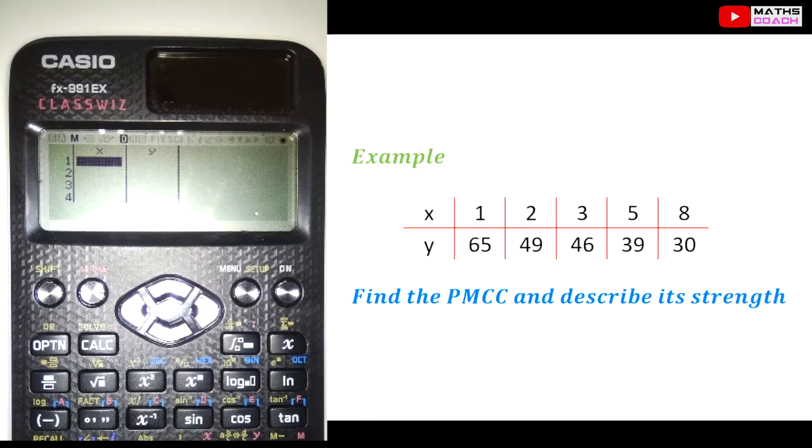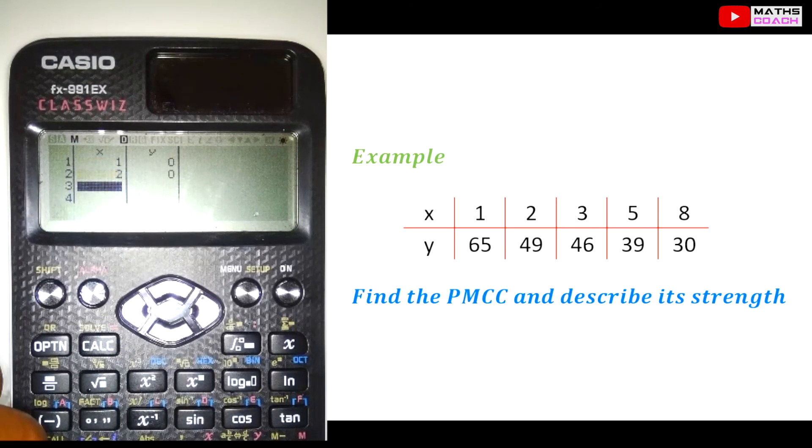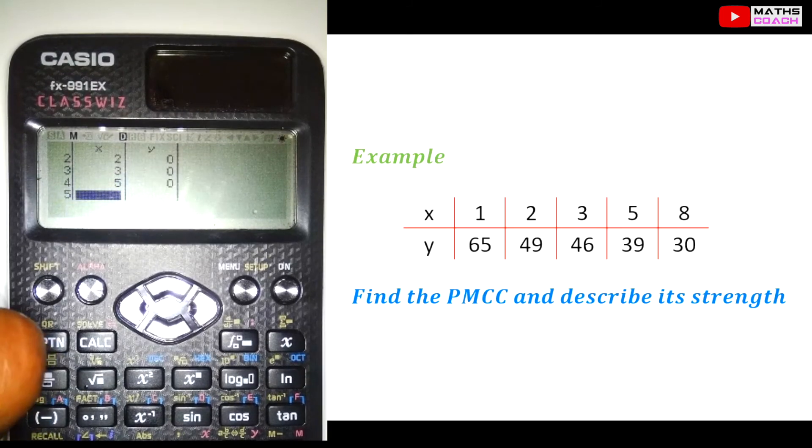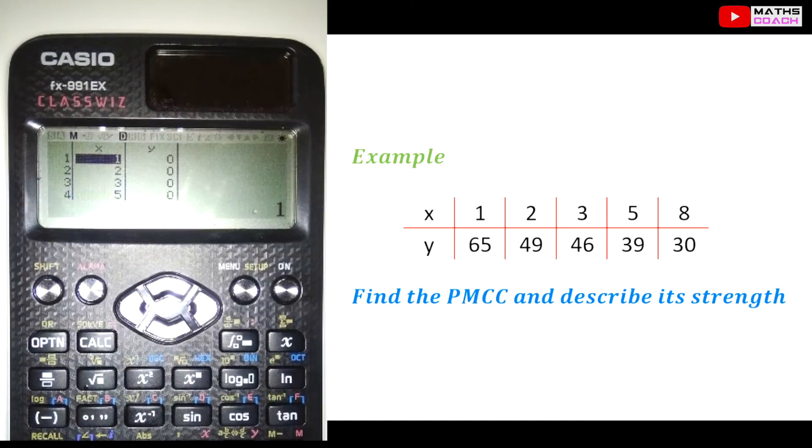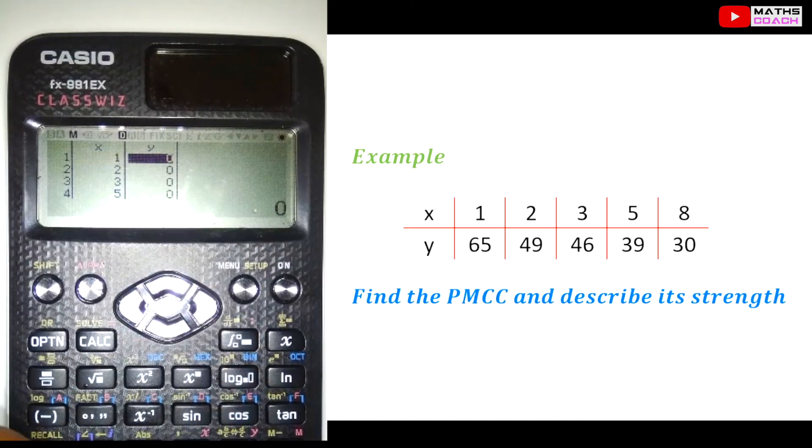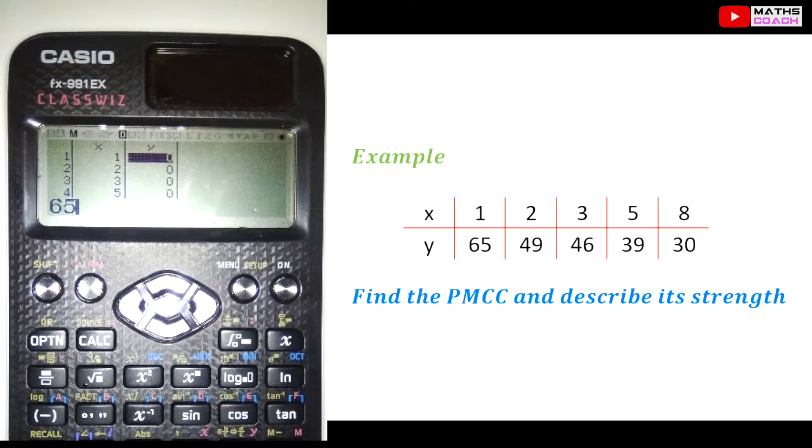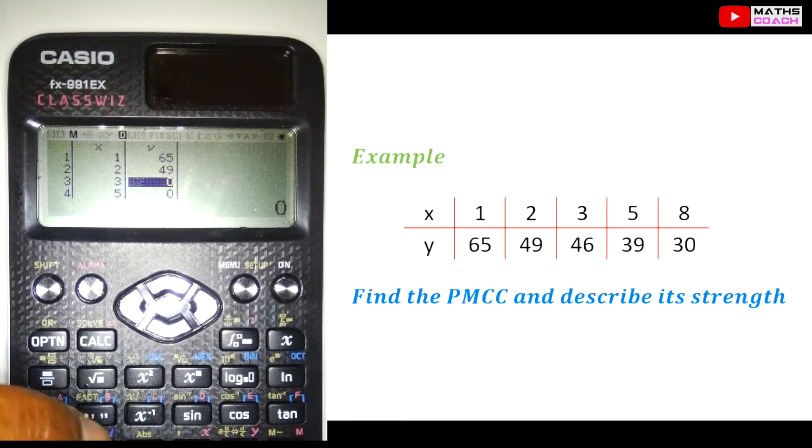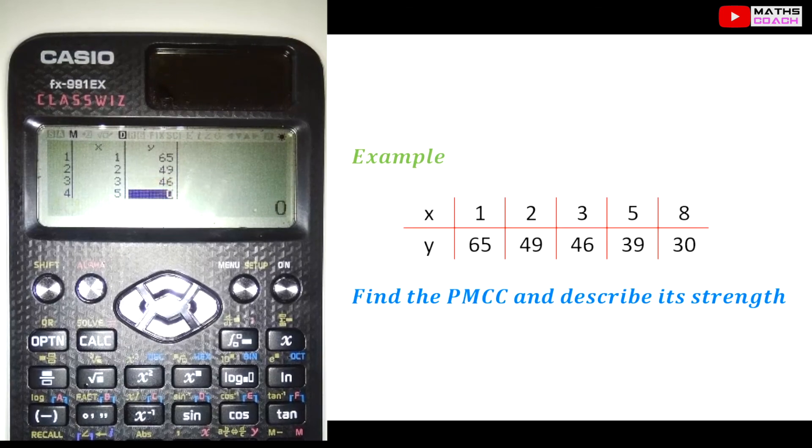And they're the values that we're going to put in on our X and Y. So the X will be 1, 2, 3, 5, 8. So we're going to have 1, 2, 3, 5, and 8. And we then go to our Y values and we type in 65, 49, 46, 39, and 30.